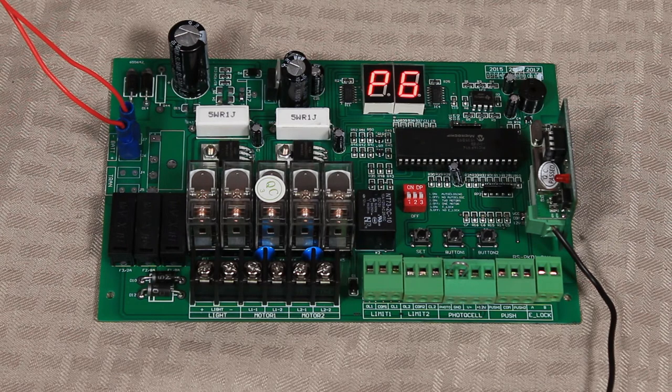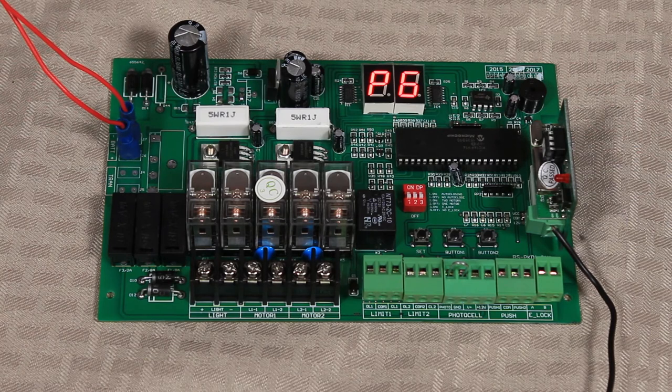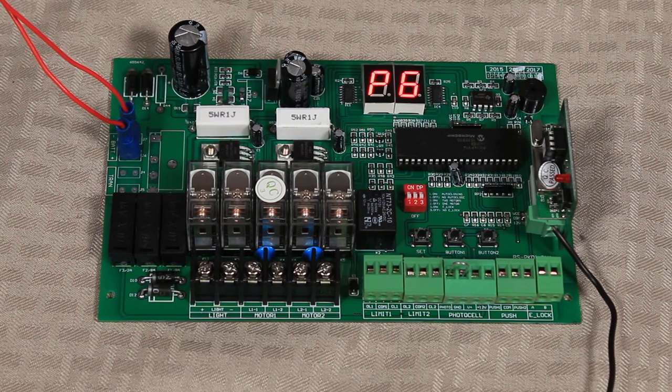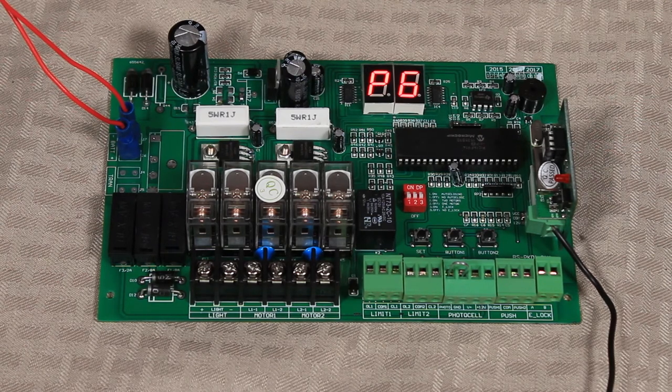The setting goes from zero all the way up to 99 seconds. What this means is once the gate reaches the fully open position and hits that open limit switch, it will stop and the timer will start, meaning AU will come up on the display.